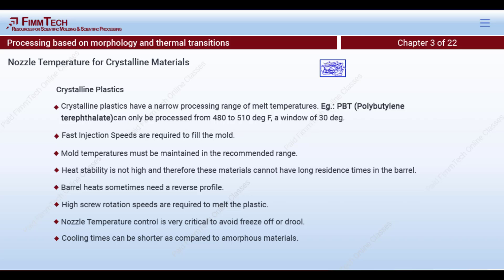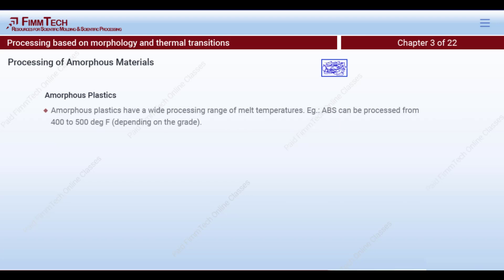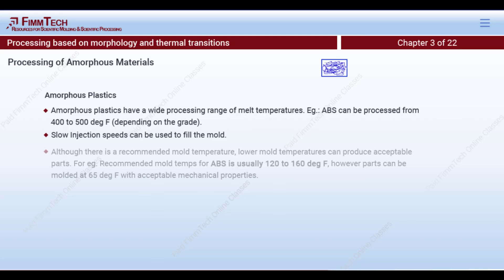The same part molded in nylon can be ejected from the mold much faster than if it were molded in ABS, considering visual properties only. Now looking at amorphous materials: the processing range for amorphous materials is wide. For example, depending on grade, ABS is processable from 400 to 500°F. For the same 12-inch part, injecting at 500°F at a slower speed still allows the plastic to reach end of fill while remaining processable, so slower injection speeds are acceptable.